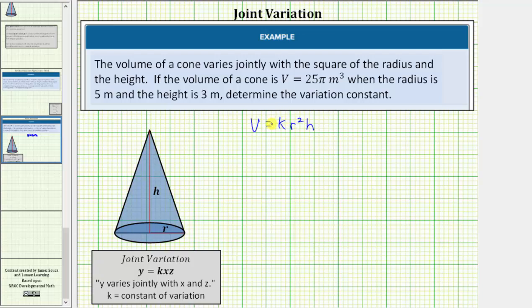Our goal here is to determine the value of k, the variation constant, when the volume V is equal to 25π cubic meters, the radius is 5 meters, and the height is 3 meters.